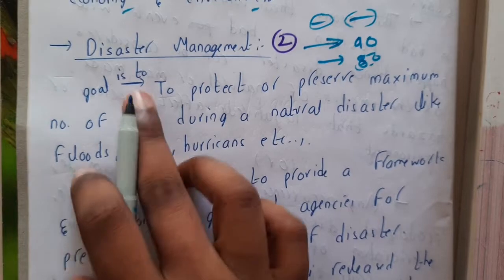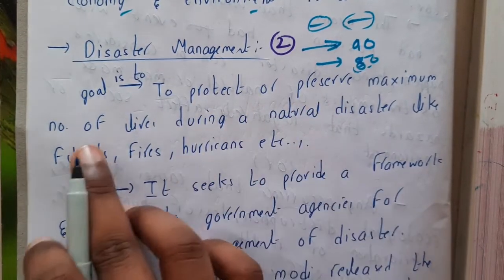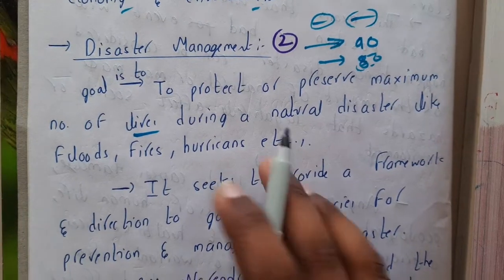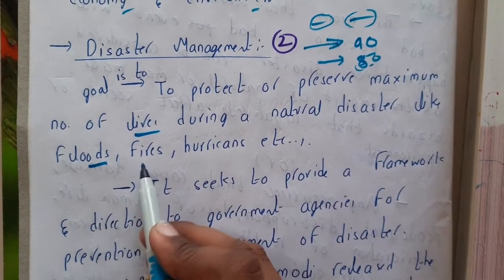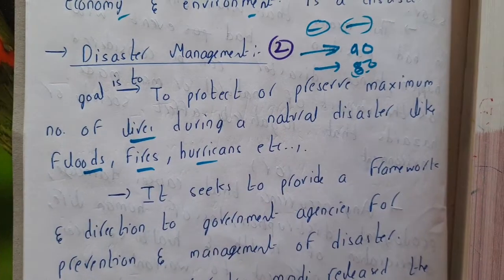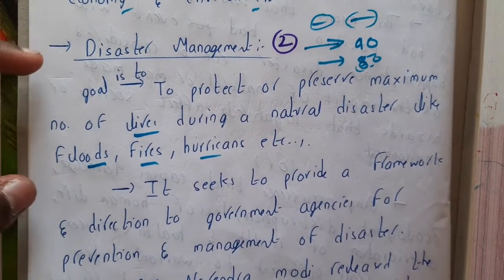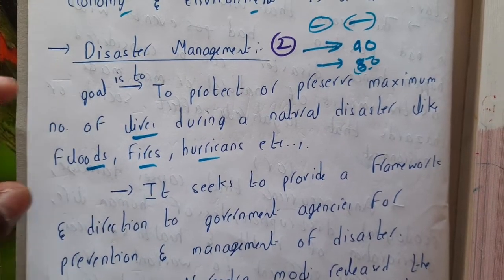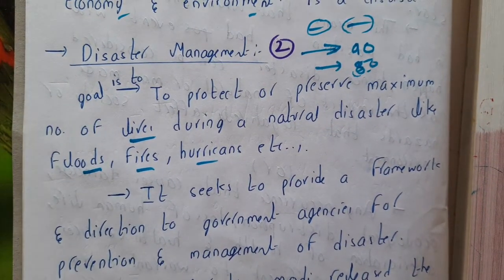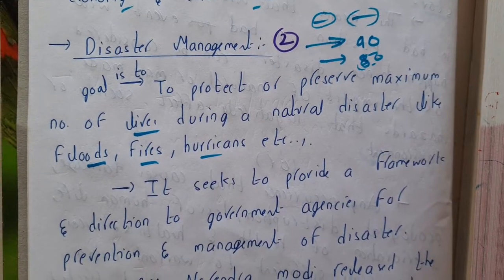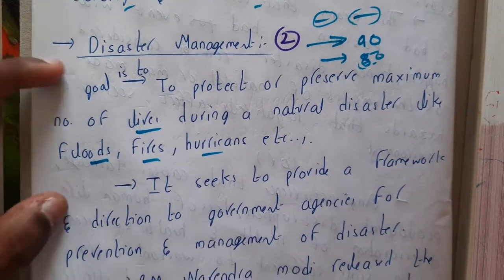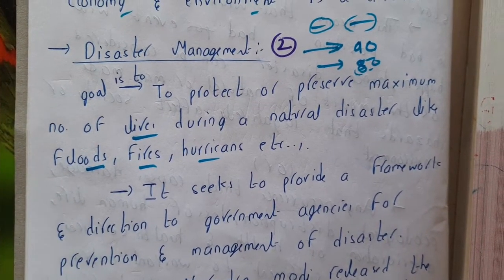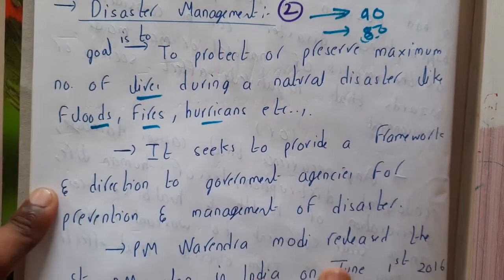The goal of disaster management is to protect or preserve a maximum number of lives during a natural disaster like floods, fires, hurricanes, etc. Basically, when something bad is happening, disaster management is the framework we should follow so that the minimum number of deaths and minimum loss will occur — we are indirectly controlling the disaster.